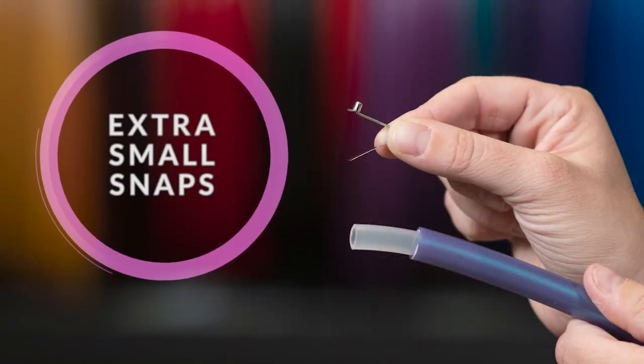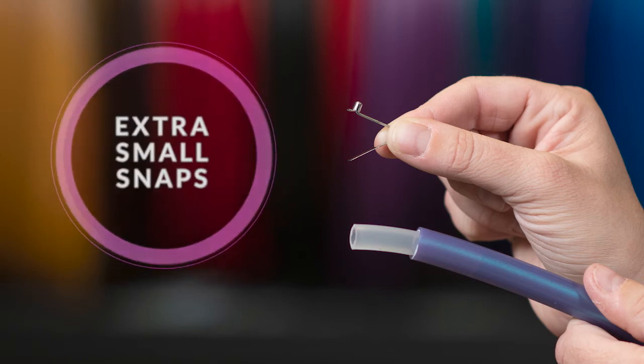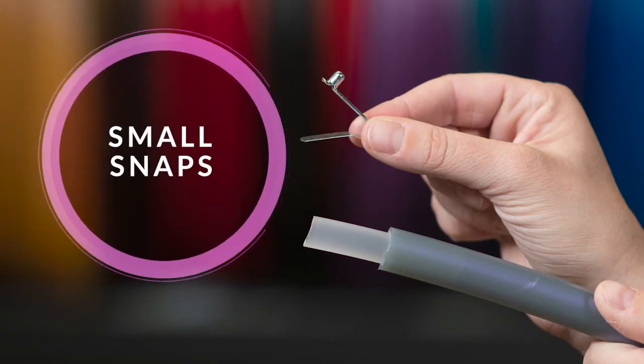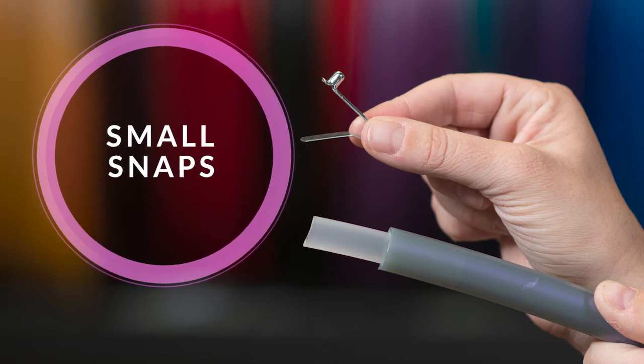Extra small snaps are used for 1/2 inch hoops using 3/8 inch insert material. Small snaps are used for 5/8 inch hoops and 11/16 inch hoops using 1/2 inch insert material.